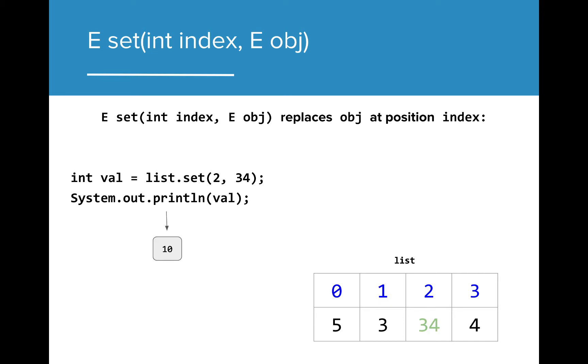We can store the value that has been replaced in a variable of its own. If we were to print the variable val, the result would be 10, which was the value that was replaced at index 2.